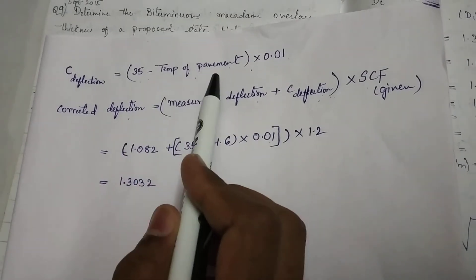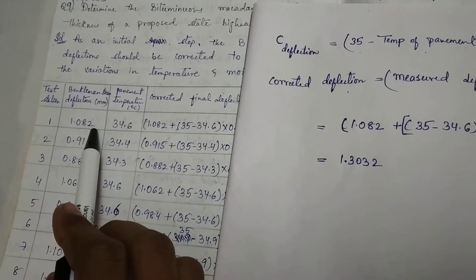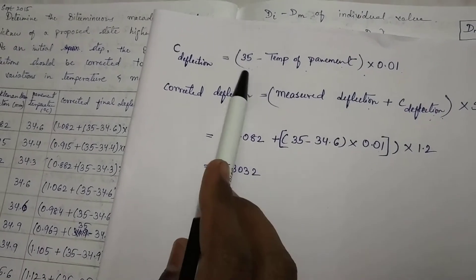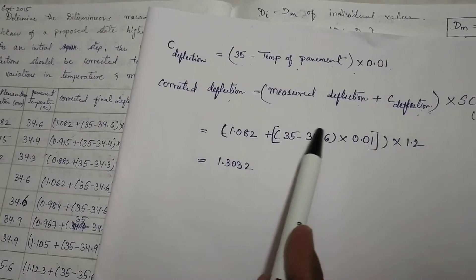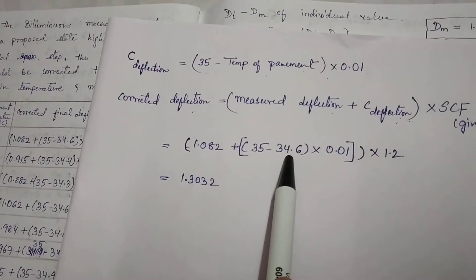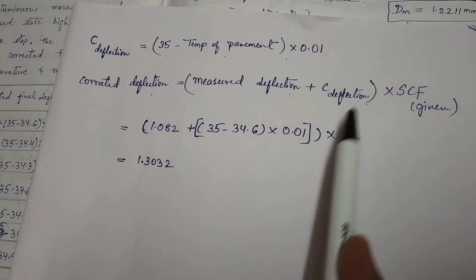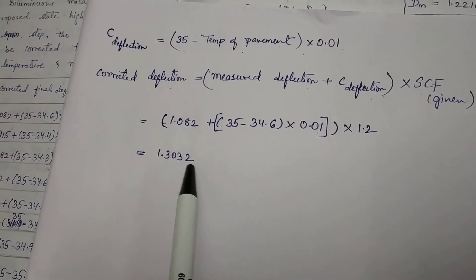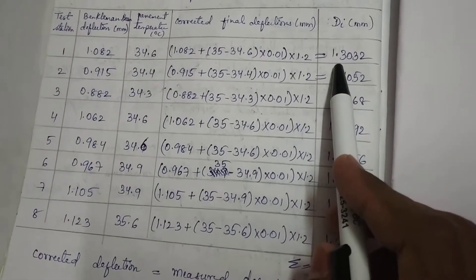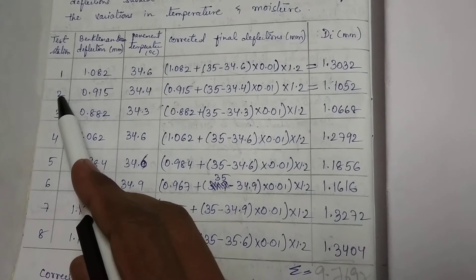The C deflection formula is: (35 minus pavement temperature) multiplied by 0.01. For the first station, substituting 1.082 plus (35 minus 34.6) multiplied by 0.01 as C deflection, then multiplied by the seasonal correction factor of 1.2, we get 1.3032. So for the first station, Di equals 1.3032 mm.